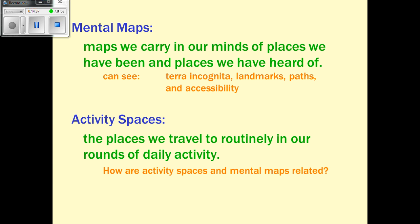Mental maps are maps we carry in our minds of places we've been and places we've heard of — we make perceptions about places based on those. We tend to use them when giving directions: visualizing turning left out of a parking lot or turning right at the McDonald's. Activity space is an area in which we participate in activities, meaning where we go to the grocery store, where we work out, where we go to school — all of those are activity spaces.